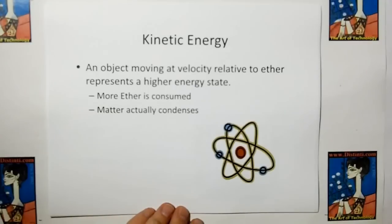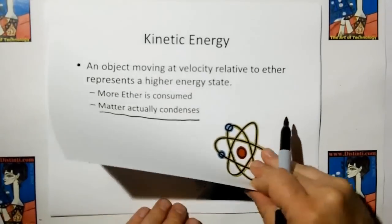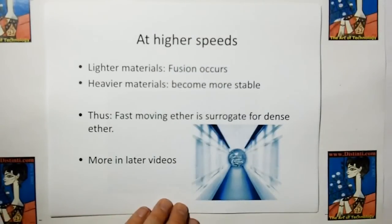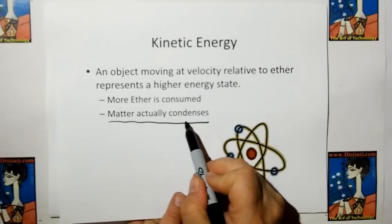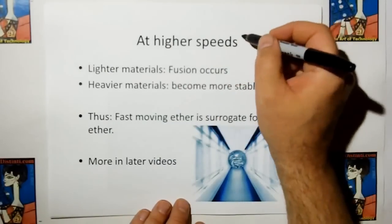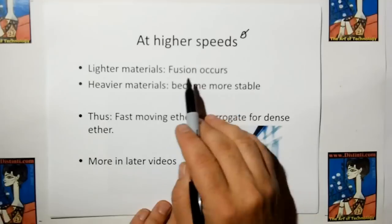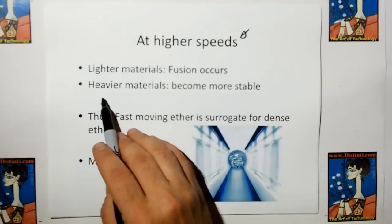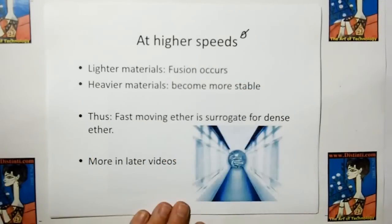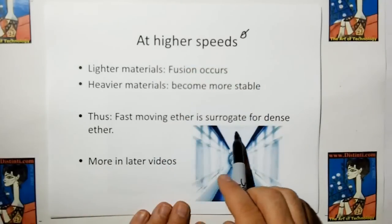An object moving at velocity relative to the ether represents a higher energy state — more ether is consumed, and matter will actually condense slightly. At higher speeds, lighter materials like hydrogen will fuse to helium. Heavier materials like plutonium and lawrencium will become more stable as their velocity relative to the ether increases. Some people say that's time dilation — it's not. Thus faster-moving ether is a surrogate for dense ether.